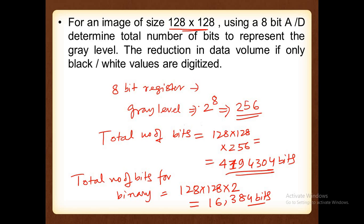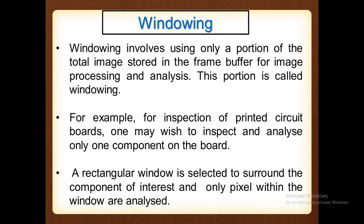After capturing and pre-processing via masking, we reduce the image size. Then comes the windowing technique, which uses only a portion of the image. The whole image does not always provide useful information — only a specific segment does. For example, during PCB inspection, you may want to inspect only one component on the board. Thresholding is one of the quickest methods: a rectangular window is selected to surround the component of interest, and only pixels within that window are analyzed.